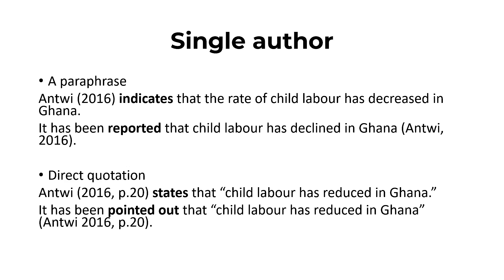Now let's look at how to cite the source for a single author. For a single author, if it is a paraphrase, this is how we go about it. For example, we have Entry 2016 — Entry is the author's last name, 2016 is the year of publication. The citation follows and indicates that the rate of child labor has decreased in Ghana. That is what we call the narrative.